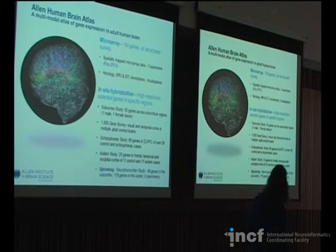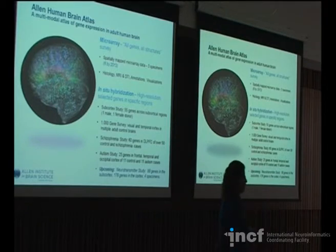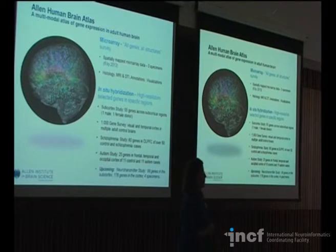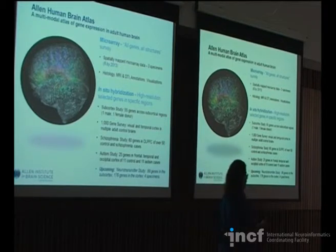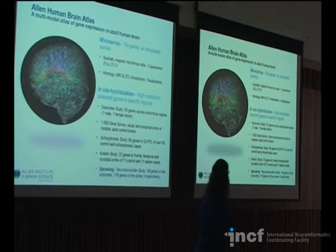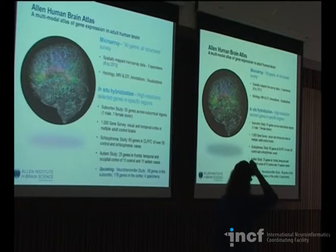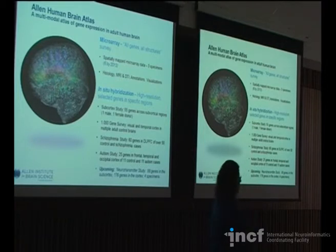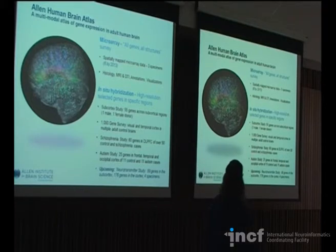The histology allows you to go in and look at cytoarchitecture of exactly where that sample was taken from. If you're coming from an anatomy background, you can say I specifically want this cytoarchitectonic area and compare it to another. You can go in and handpick the samples you want to use. In addition, there's an in-situ hybridization component with high-resolution cell-level gene expression for specific regions. These started off as individual studies that have now come under the umbrella of the Human Brain Atlas.